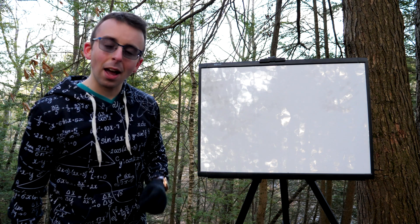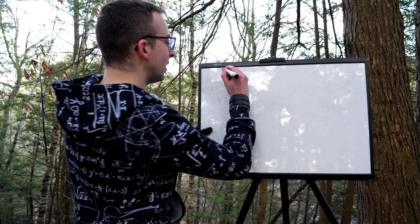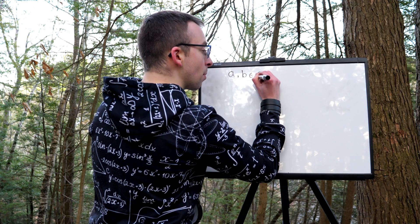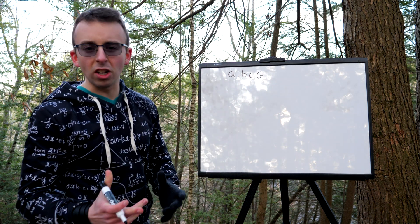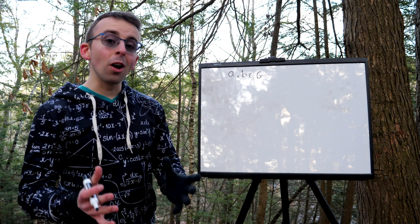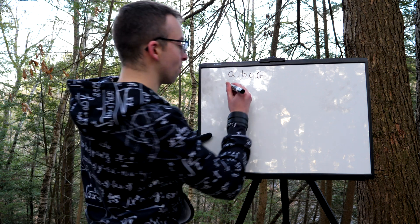Today, we've got a nice, simple abstract algebra proof. Let's say we've got two elements, a and b, from a group that we'll call g. If a and b commute, then their inverses also commute. So that's what we want to prove.